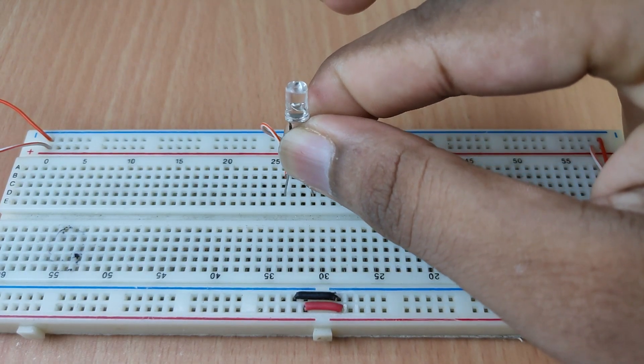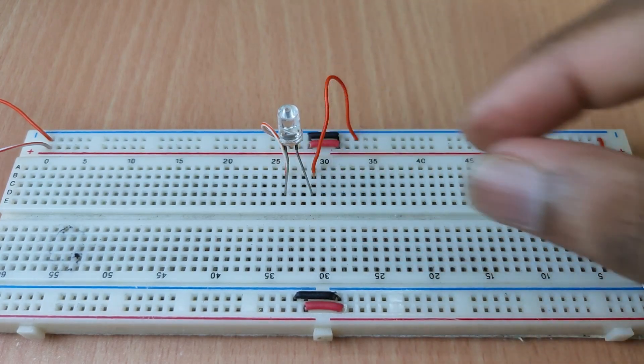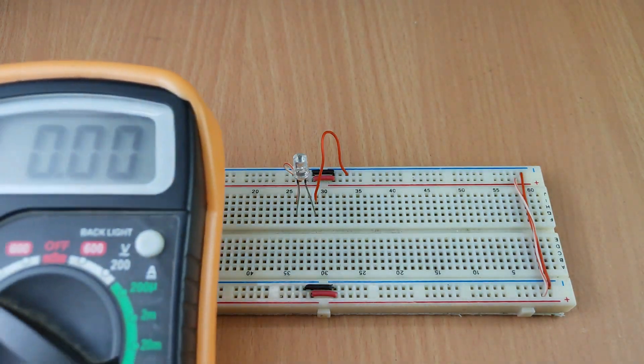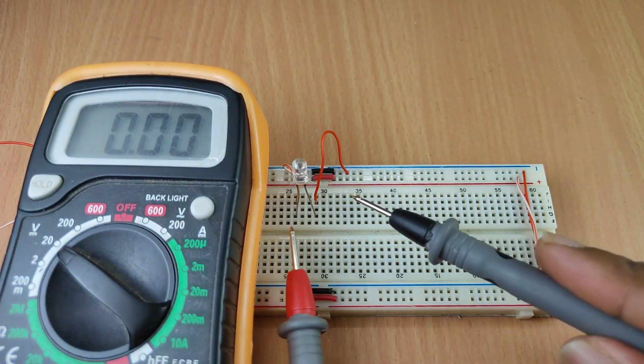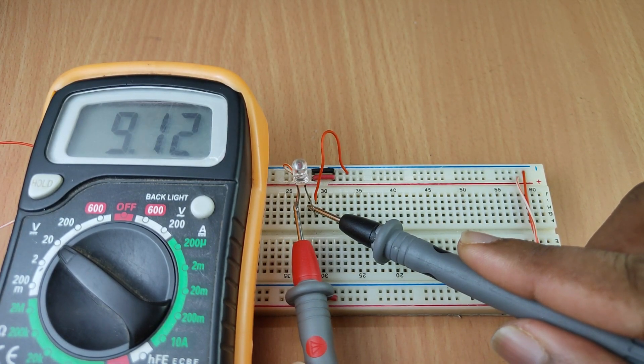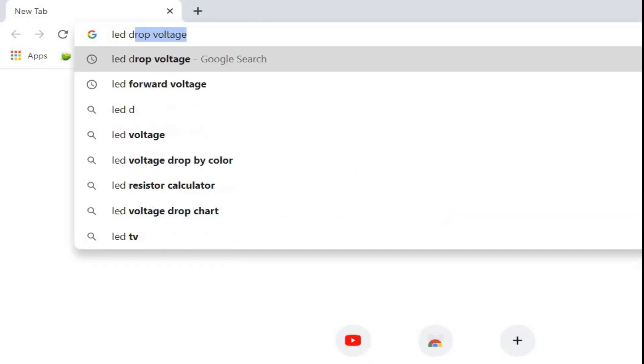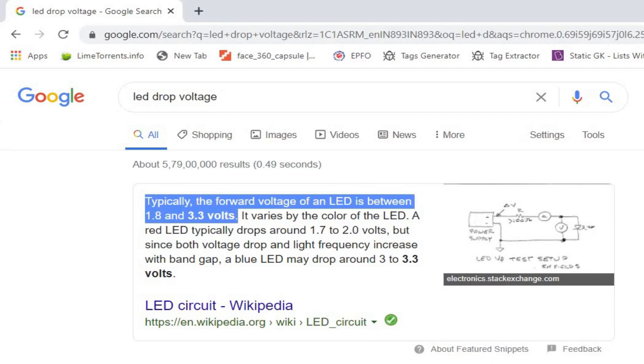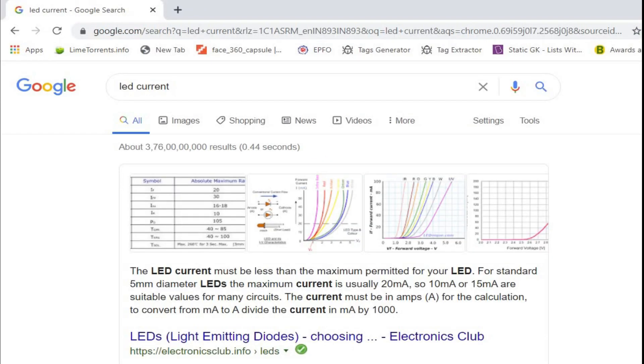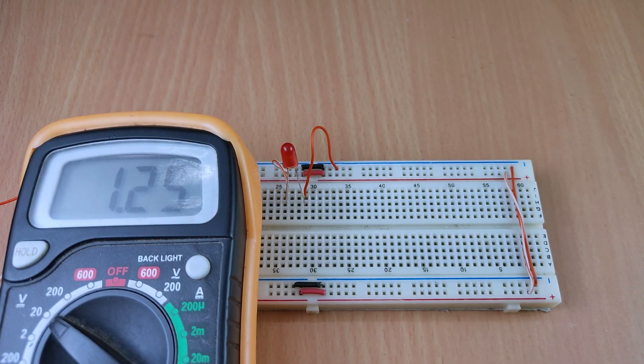Many of you might experience burning the LED instantly when connected to the power supply. This happens by providing high voltage to the LED rather than the recommended forward voltage. The recommended forward current and voltage can be searched on Google or we may also check it manually by varying the input voltage to the LED.